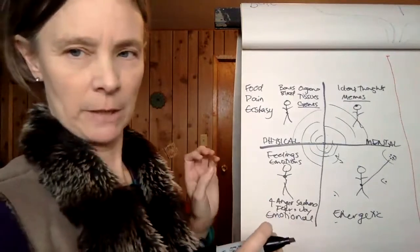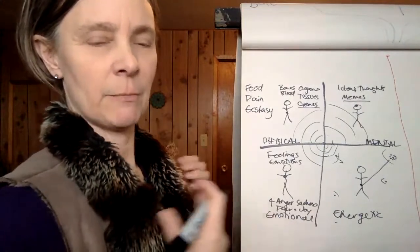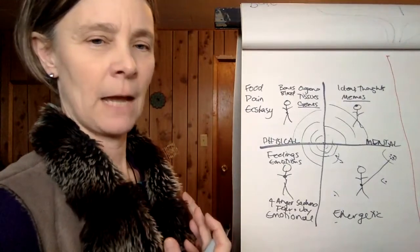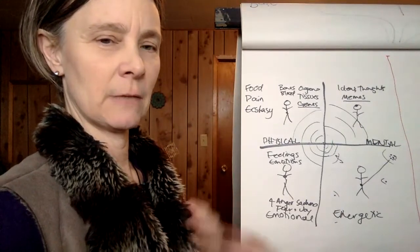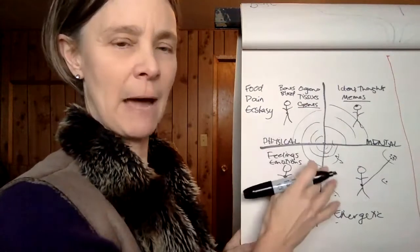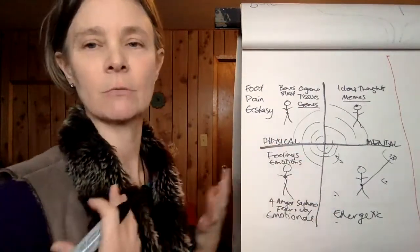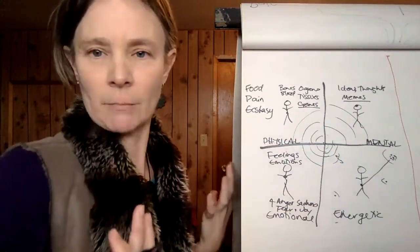So what about the fifth body? The fifth body is called the archetypal body. And for a long time, the four body map was the map that was used in possibility management to refer to our bodies.